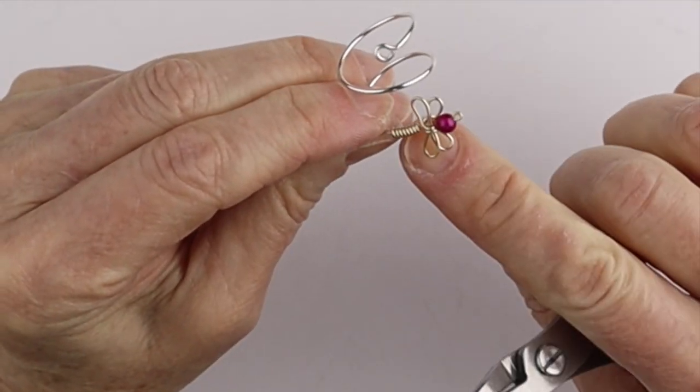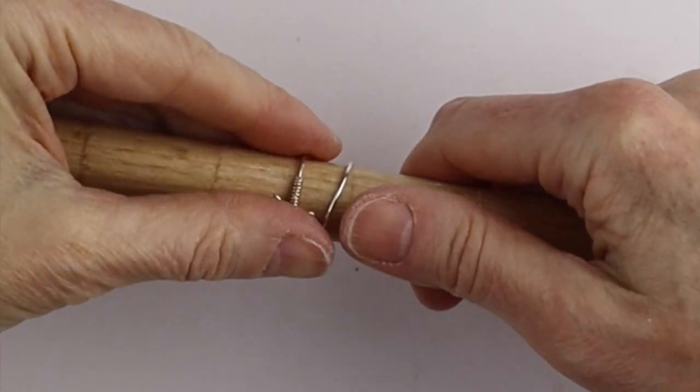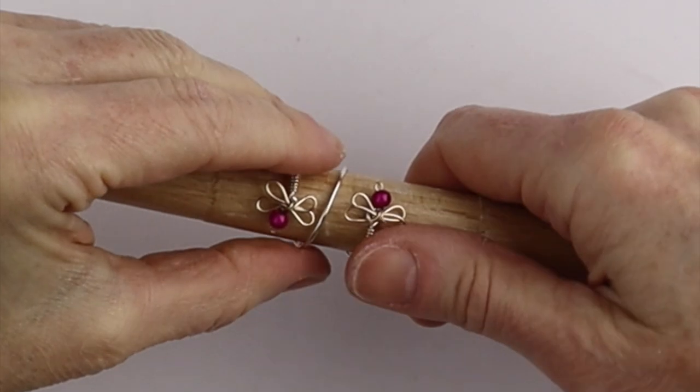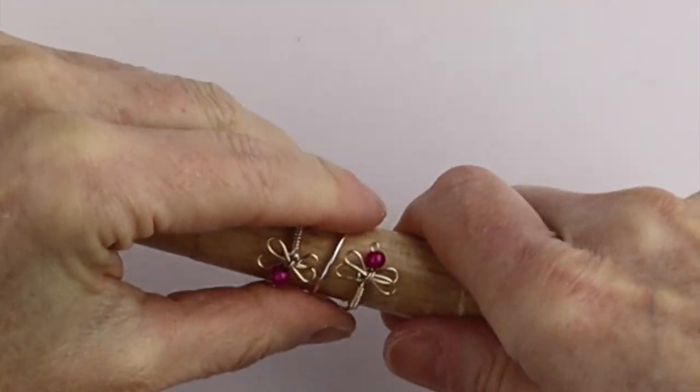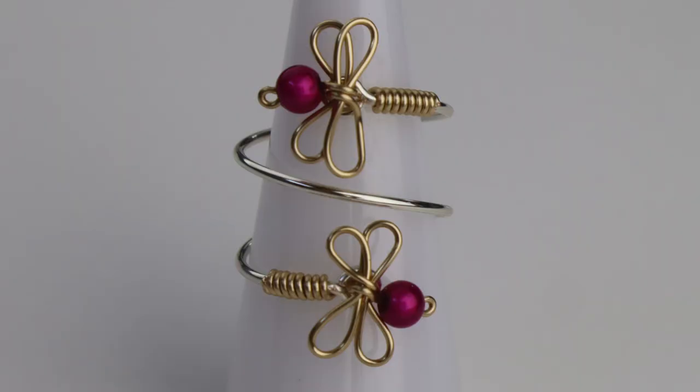Gently we're going to just separate those. And then we just do the same on the other side. So once you have the two dragonflies done, you'll put it back on the ring mandrel and just make sure it's shaped how you like. And I cannot get over how cute these dragonflies are. Have fun with them.